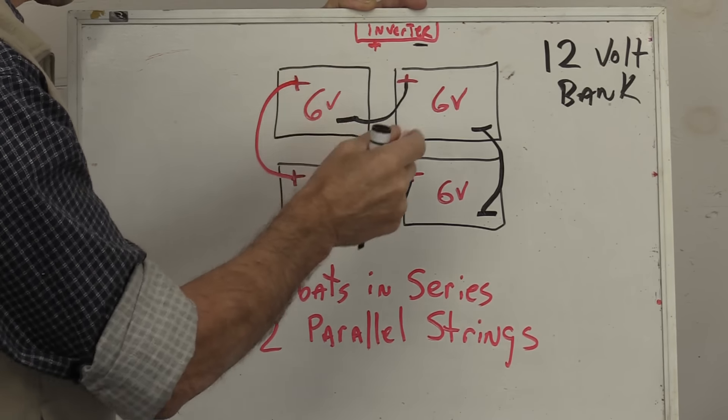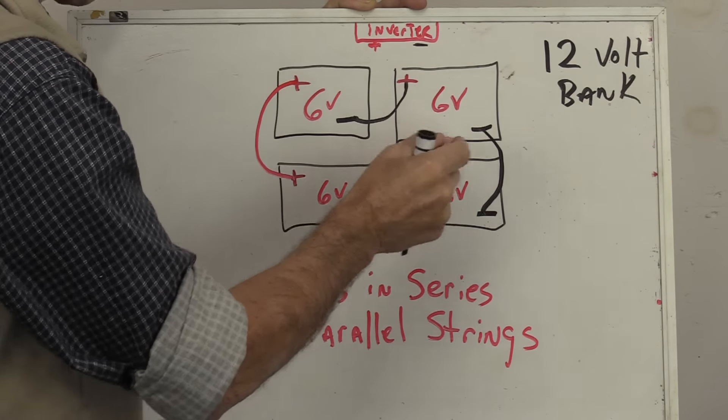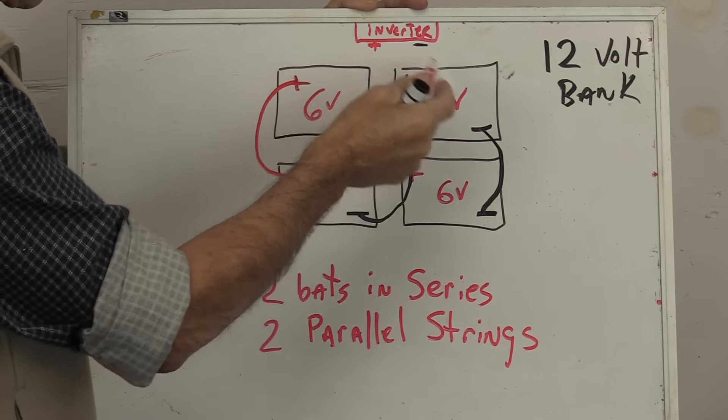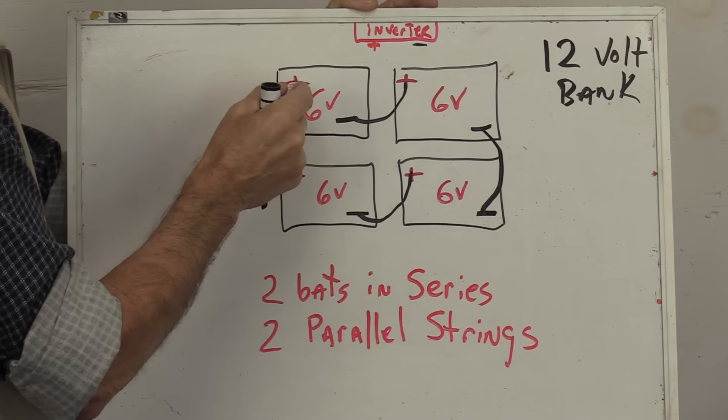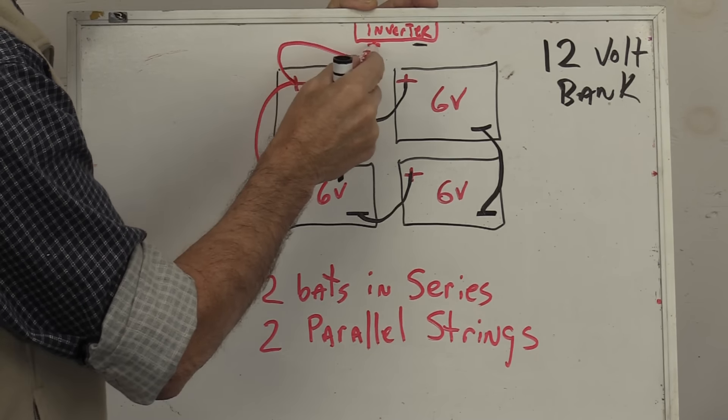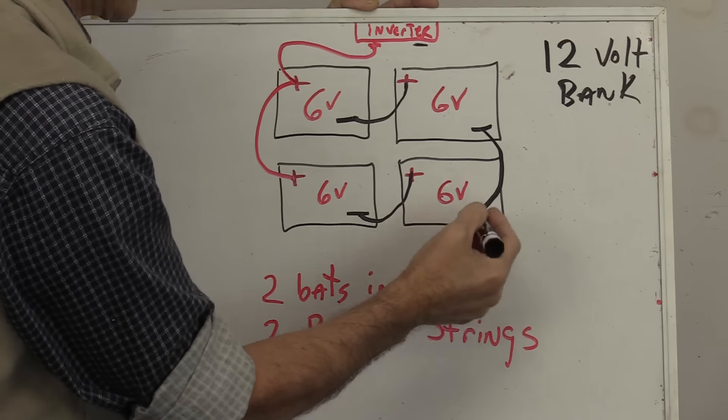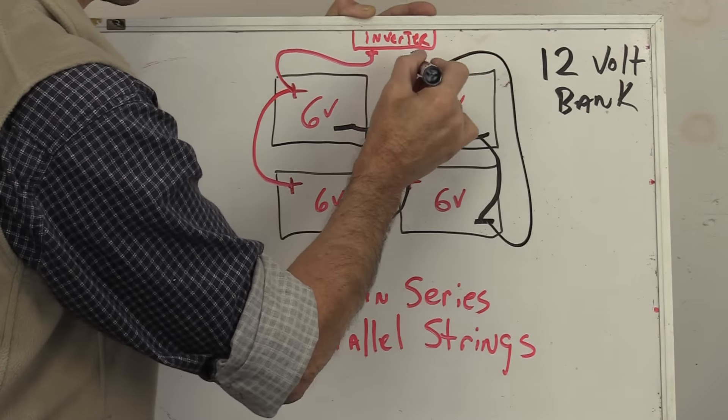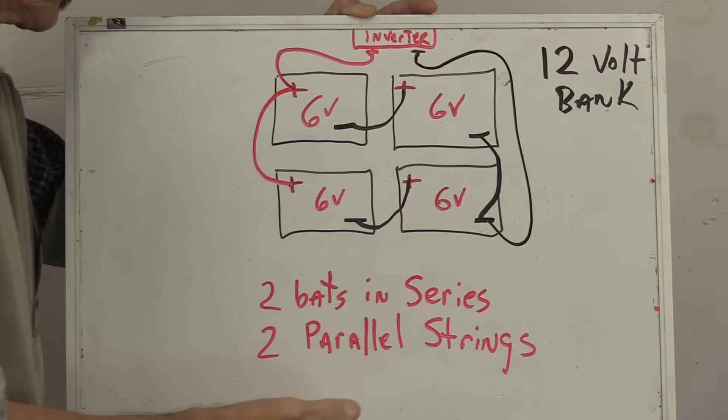Now these two sets are hooked together in parallel now. Now we want to connect all of these up to our inverter. Come off this post the positive in your inverter and off the other post up to the negative in your inverter. There you go.